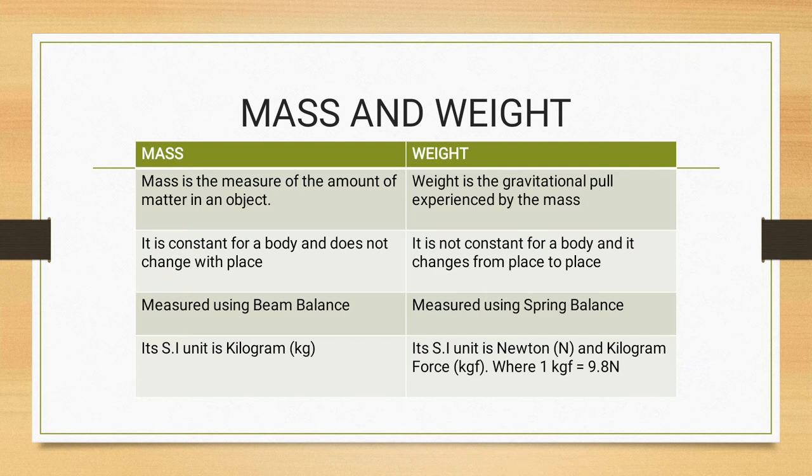Mass is the measure of the amount of matter in an object, and weight is the gravitational pull, that is, how much it is attracted towards the earth because of the mass.